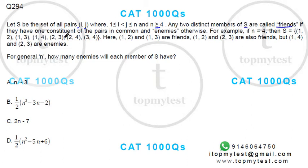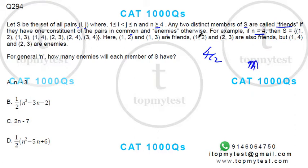For example, when n = 4, the pairs that can be formed are: (1,2), (1,3), (1,4), (2,3), (2,4), and (3,4). That's taking any two members from four at a time, which is 4C2. Similarly, for any value of n, the number of pairs that can be formed in this set will be nC2.